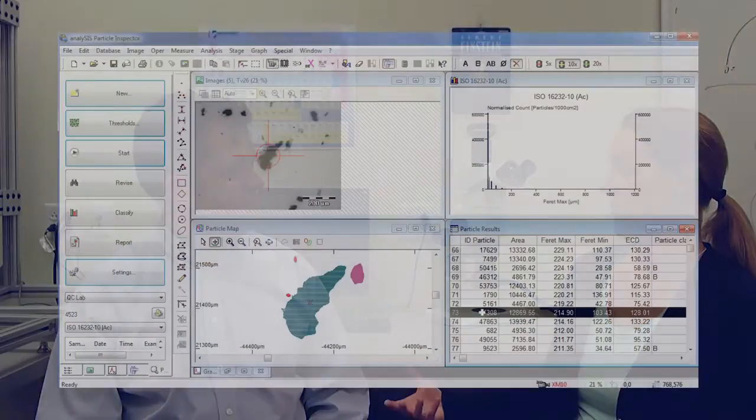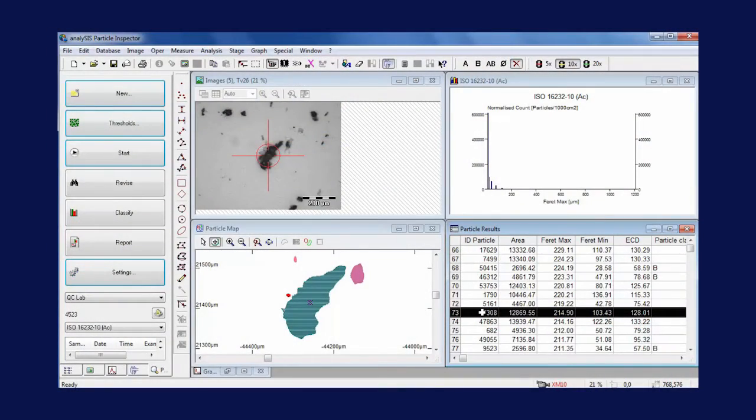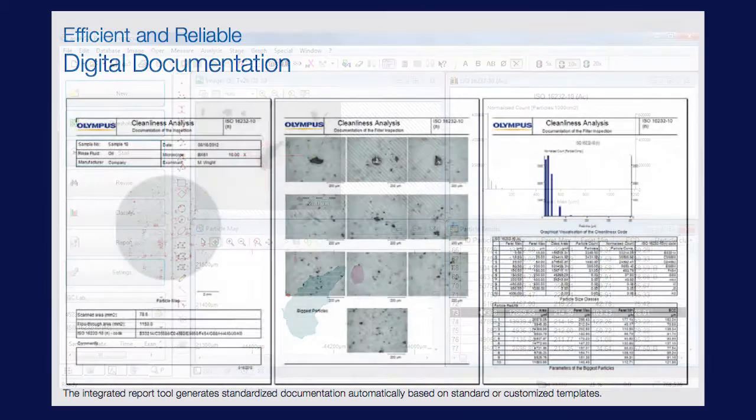And not only then, you can also, the software has the ability to do documentation for you and save that all on board on the database so that you can go back and look at it at a later time. And that really provides the production line for the manufacturers and the suppliers that real-time information and that real true documentation of all their data for cleanliness.